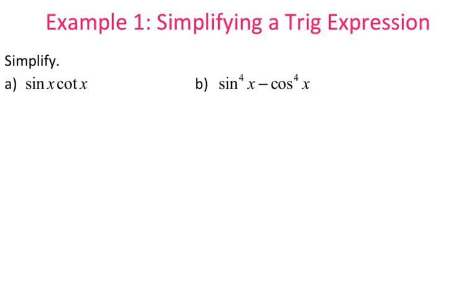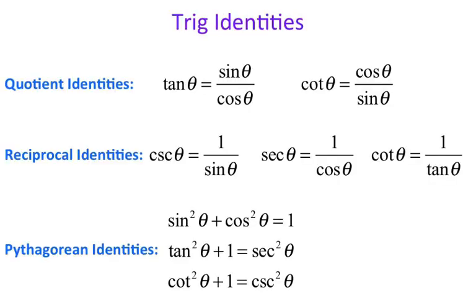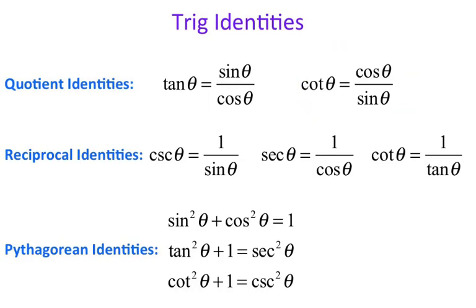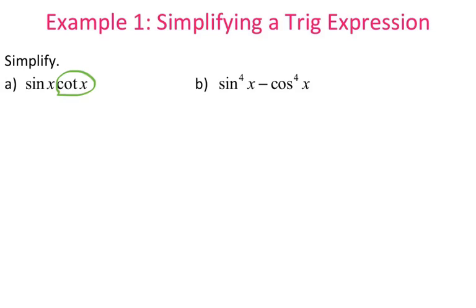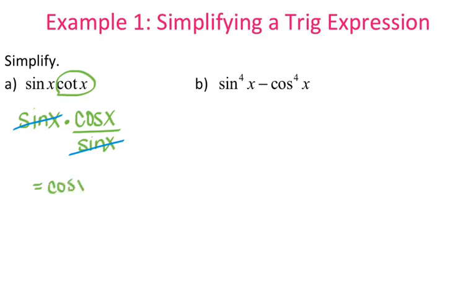But if you look at cotangent of x and go back to the list of identities, cotangent is equal to cosine over sine. So we can write this as sine of x times cotangent, which we replace with cosine of x over sine of x. The sine of x on top and on bottom cancel, so this expression simplifies to just cosine of x.